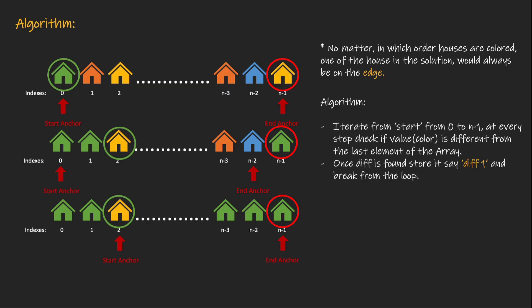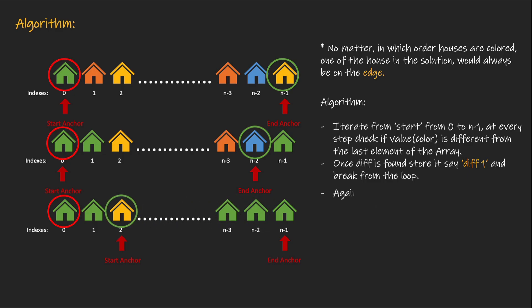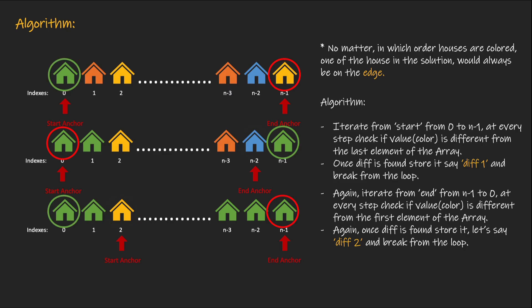This doesn't necessarily mean we've found the maximum distance — we have to repeat the process from the right hand side as well. This time we keep the left hand marker fixed at index 0 and iterate on index n-1. If colors are different, we're good; else we move to index n-2 and compare with index 0 again, continuing until we find a differently colored house. We iterate from n-1 to 0, and at every step check if the color differs from the first element. Once found, we store it as diff2 and break. Then we compare diff1 and diff2 and return the maximum.